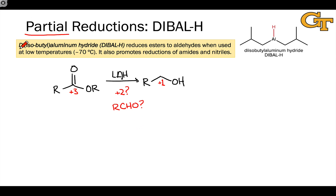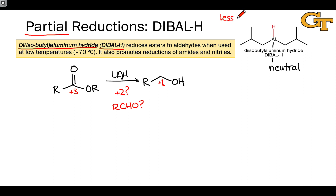A great reagent for this is diisobutyl aluminum hydride, or DIBAL-H, sometimes just called DIBAL. DIBAL is really interesting and different because, unlike lithium aluminum hydride, the aluminum atom within DIBAL is neutral. This makes the hydrogen atom within DIBAL intrinsically less nucleophilic than the hydrogens we find in, for example, the aluminum hydride anion, making DIBAL a little less intrinsically reactive than the aluminum hydride anion.